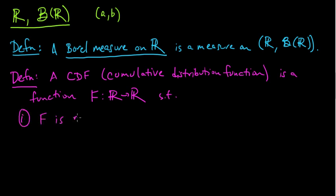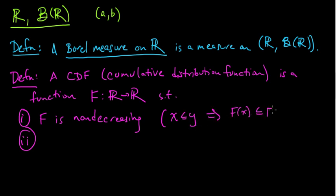One, F is non-decreasing. Let me say what I mean by this first. F is non-decreasing, what does that mean? That just means that if X is less or equal to Y, then that implies F of X is less or equal to F of Y. So a non-decreasing function looks something like this. It can flatten out, but it can't go back down.